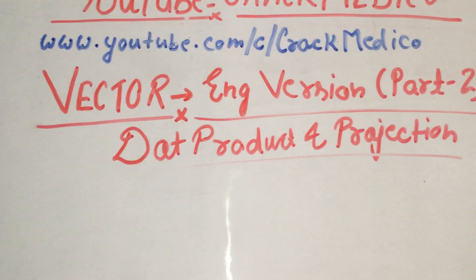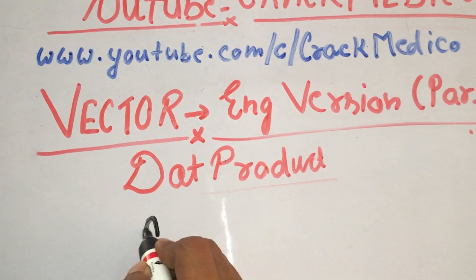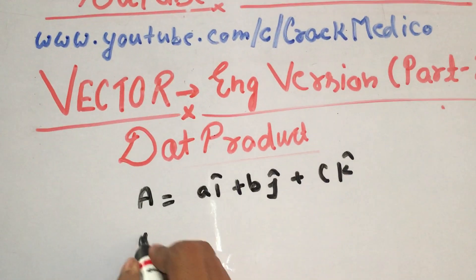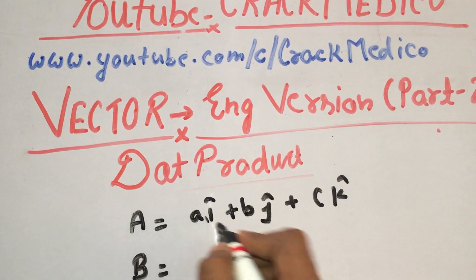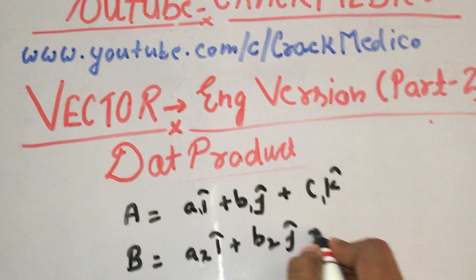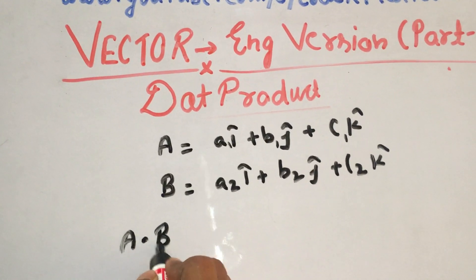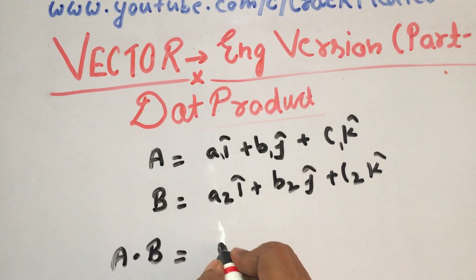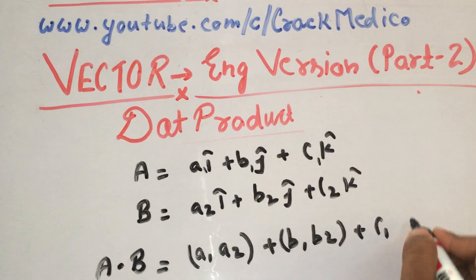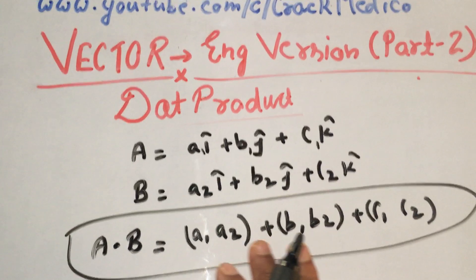So first we will discuss about the dot product. What is the meaning of dot product? Suppose two vectors are given: vector A is equal to a1·i plus b1·j plus c1·k, and vector B is equal to a2·i plus b2·j plus c2·k. So the dot product A·B is equal to a1·a2 plus b1·b2 plus c1·c2. That's the formula for the dot product between A and B.